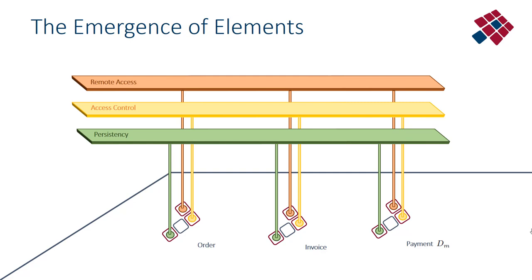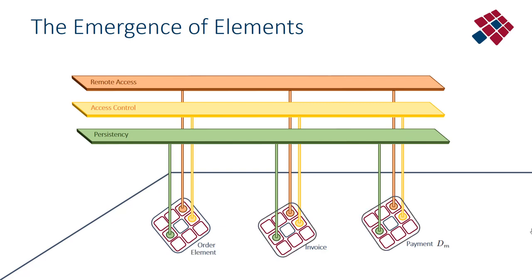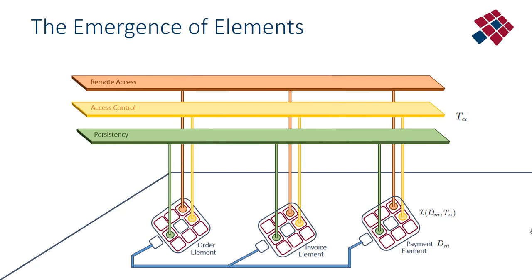What you get is a whole set of functional entities in your system, and for every one of these functional entities a set of cross-cutting concerns to which you have to connect. So you get a number of classes centered around the central class representing the actual functional entity — like an invoice, order, or payment. You would also need a standard interface class for every functional entity so you can interact between these entities without becoming technology dependent. You need a technology-agnostic interface.